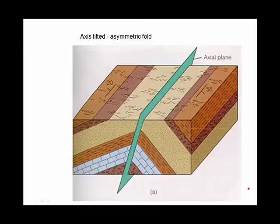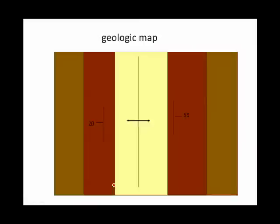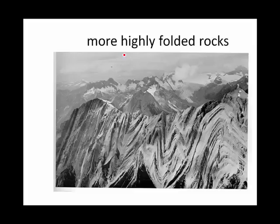Here we have an anticline, but the two limbs of the anticline have different dips. The left side is dipping 20 degrees, while the right side is dipping 55 degrees. In this case, it's asymmetrical, and the axis of the fold is at an angle. If you were to see this on a geologic map, it would look like this. Once again, this is the symbol for an anticline.